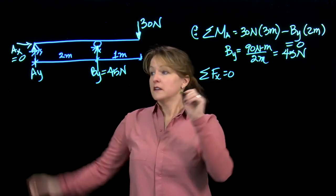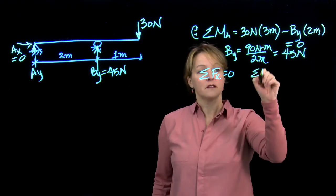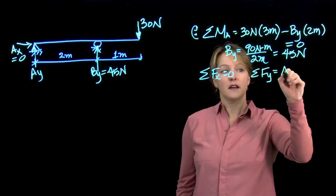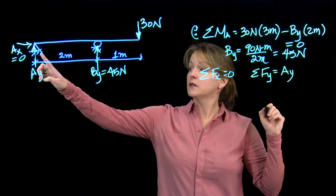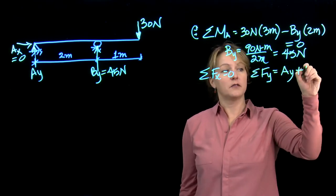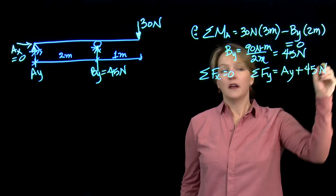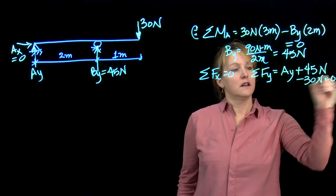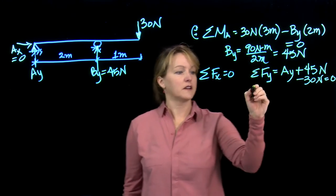And then my final one, AY. I have some forces in the Y direction. I have that vertical support at AY, I have 45 newtons at B, and then I have this downward 30. That all has to equal 0, so I can find AY.